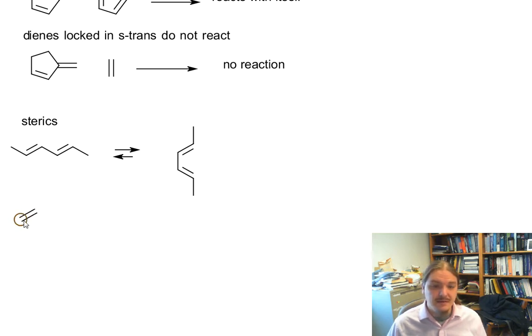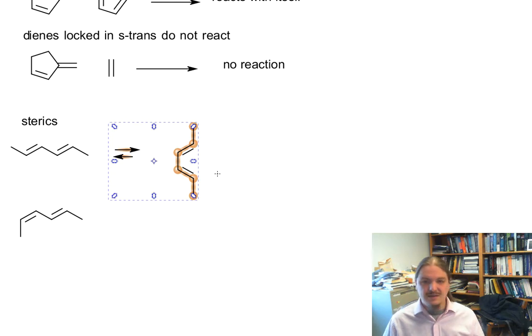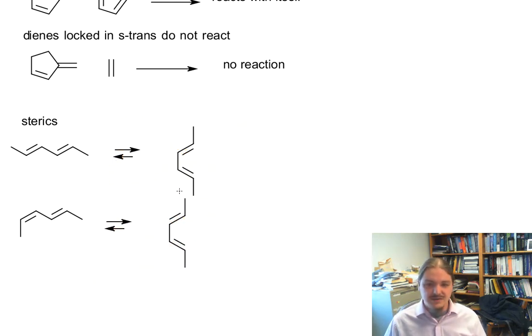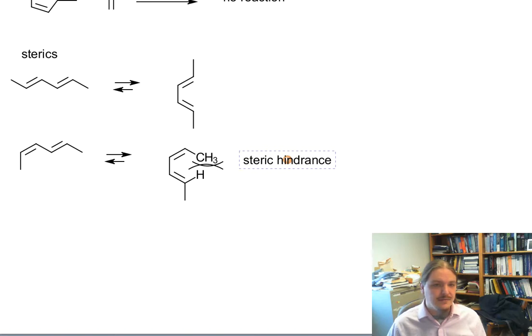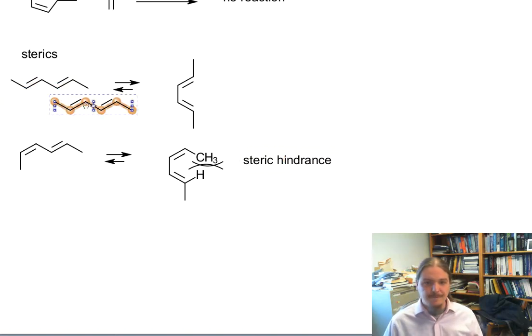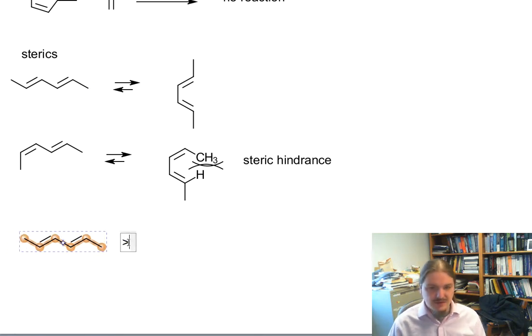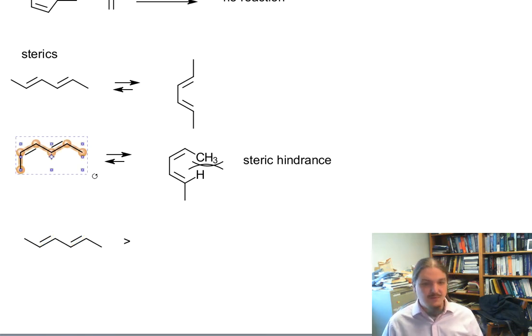But if we look at the case where we have one of these alkenes in the diene being cis, now when this thing switches to the S-cis conformation, we have this methyl group here and this hydrogen atom here really close together. And generally, it is not something that is happy. So there's some steric hindrance here. And so this alkene would react slower than that alkene. And in fact, all-trans reacts faster than the alkene with one trans and one cis.